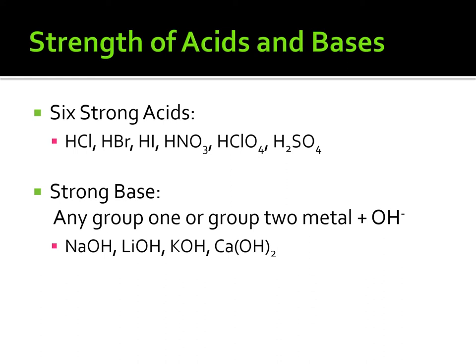For strong bases, the group is actually much bigger but easier to remember. Strong bases are any group one or group two metal on the periodic table with OH at the end of the formula. So anything that falls under group one alkaline metals or group two alkaline earth metals with OH at the end would be a strong base. I didn't list all of them, but you can figure it out by looking at the periodic table.